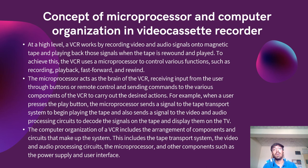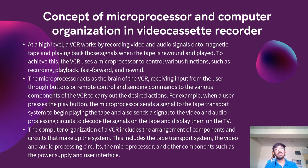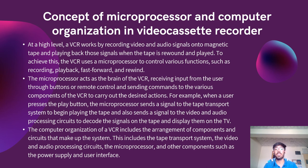At a high level, a VCR works by recording video and audio signals onto magnetic tape and playing back those signals when the tape is rewound and played. To achieve this, the VCR uses a microprocessor to control various functions such as recording, playback, fast forward, and rewind. The microprocessor acts as the brain of the VCR, receiving input from the user through buttons or remote control and sending commands to the various components to carry out the desired action. For example, when a user presses the play button, the microprocessor sends a signal to the tape transport system to begin playing the tape and also sends a signal to the video and audio processing circuits to decode the signals on the tape and display them on the TV.